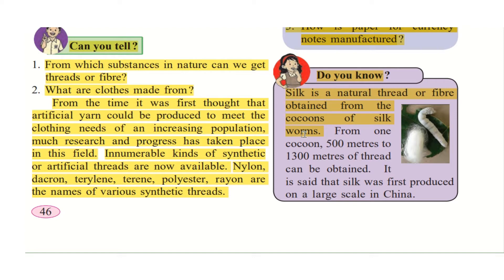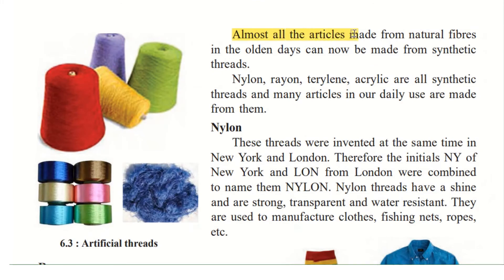That shell is called a cocoon. The silkworm goes inside it for a few weeks, and then the butterfly comes out. Those shells that the worms make and surround themselves with are called cocoons. From one cocoon, 500 meters to 1300 meters of thread can be obtained. You can observe the picture on the side. It is said that silk was first produced on a large scale in China — China was the first producer of silk.